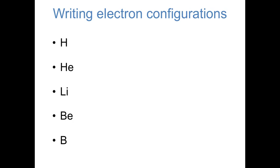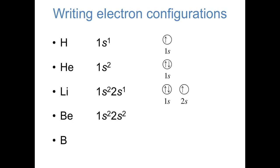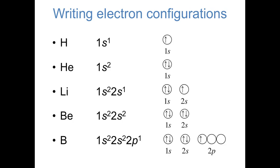Let's think about the electron configurations of the first few elements. In its ground state, a hydrogen atom has its electron in a 1s orbital — written as 1s1 — drawn as either an up or down arrow for spin up or spin down. Helium has two electrons in the 1s orbital, one spin up and one spin down. Lithium's third electron goes into a 2s orbital, and beryllium's fourth electron also goes into 2s with the opposite spin. Boron's fifth electron goes into a 2p orbital. These electron configurations are written as products of atomic orbitals, and multi-electron wavefunctions are approximately products of one-electron wavefunctions.